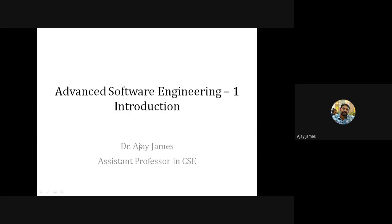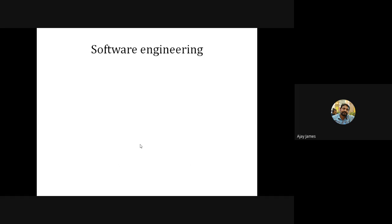So we'll go into the first chapter: Introduction to Software Engineering. Software engineering is an engineering approach for software development. That means software itself requires us to follow an engineering approach, just like civil engineering.